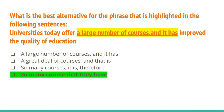What is the best alternative for the highlighted phrase in: 'Universities today offer a large number of courses and it has improved the quality of education'? We substitute 'a large number of courses and it has' with 'so many courses that they have.' Option D — 'so many courses that they have' — is the right answer.